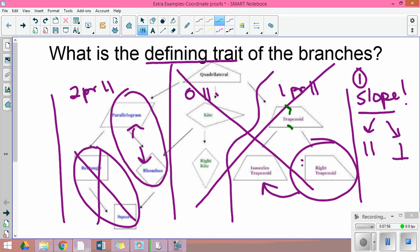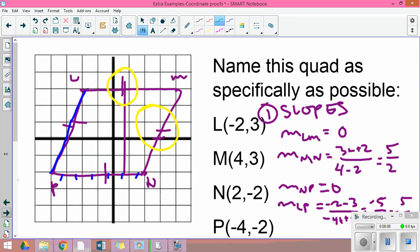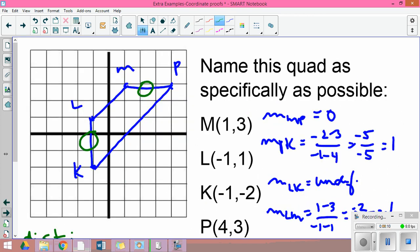Two pair parallel puts me in the parallelogram family. I knew I didn't have a right angle because of the slope, so I have to tell the difference between isosceles and regular trapezoid by checking if those legs are equal or not. The nice part about this problem is I have a horizontal and a vertical, so I can just count them.